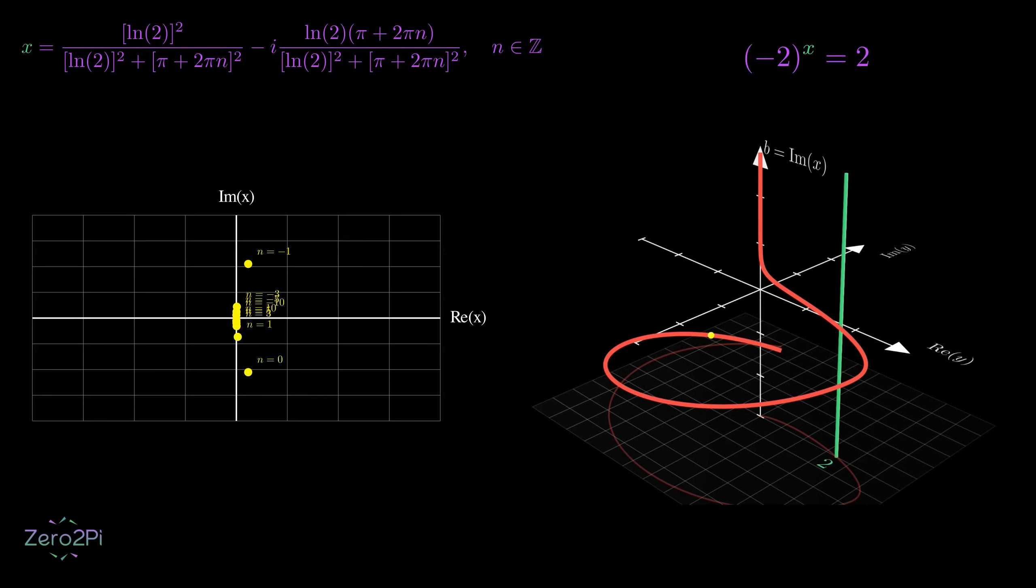And that yellow dot? That's exactly where our spiral intersects the target value of 2. This spiral winds its way through three-dimensional space, and every time it crosses that green line, we have another solution to our equation.